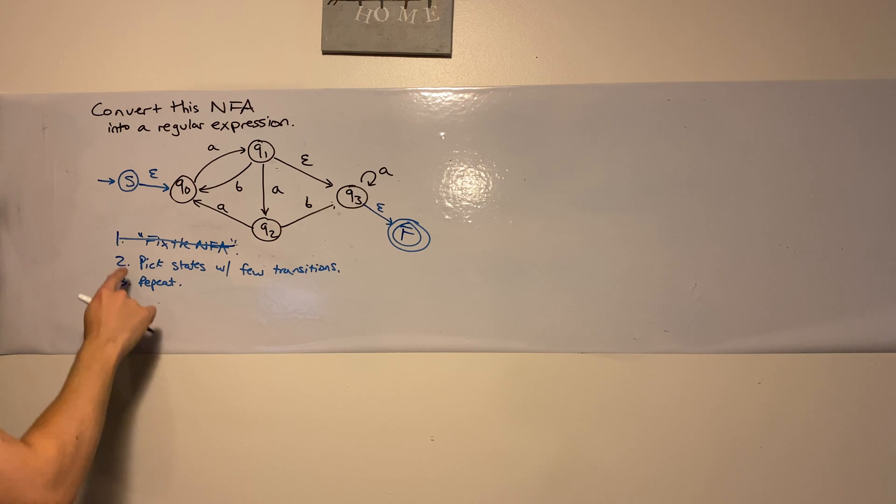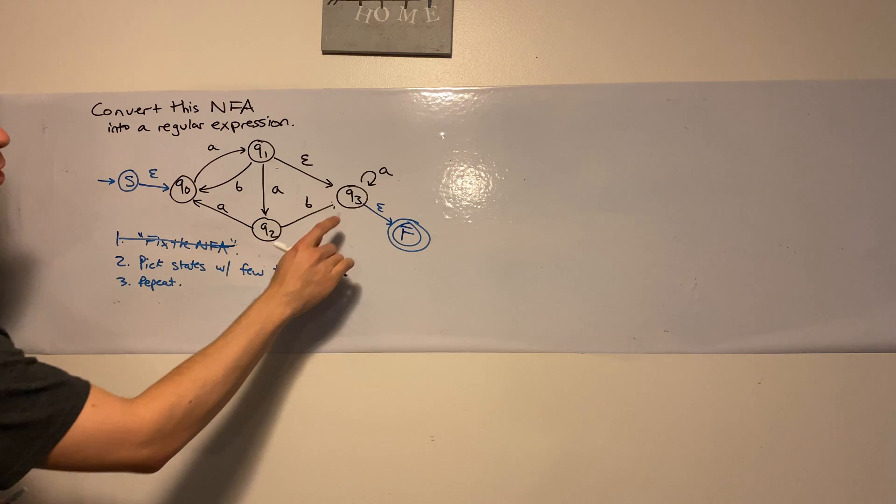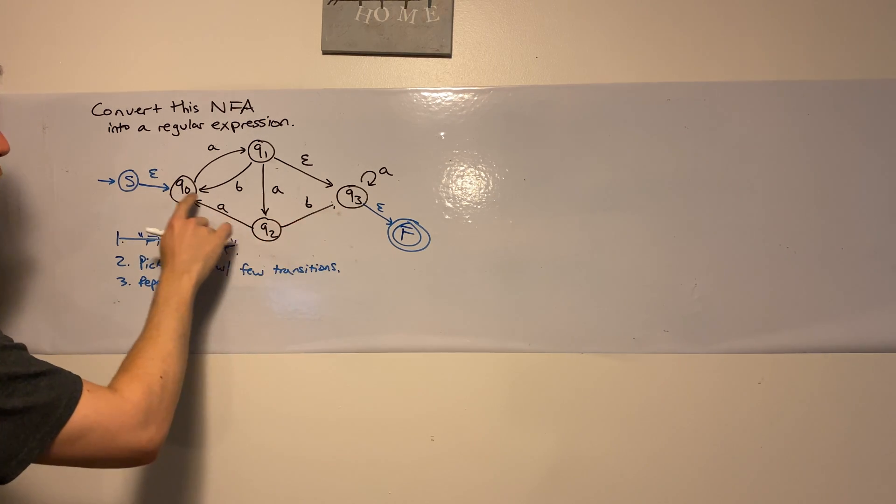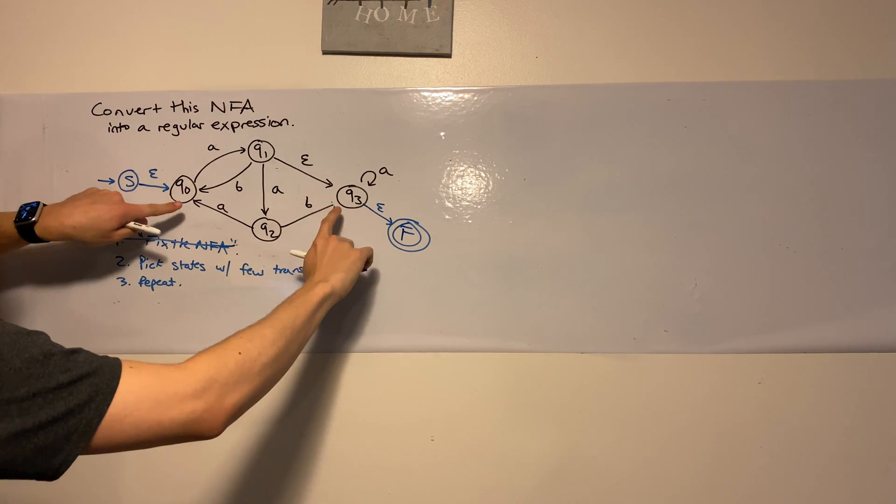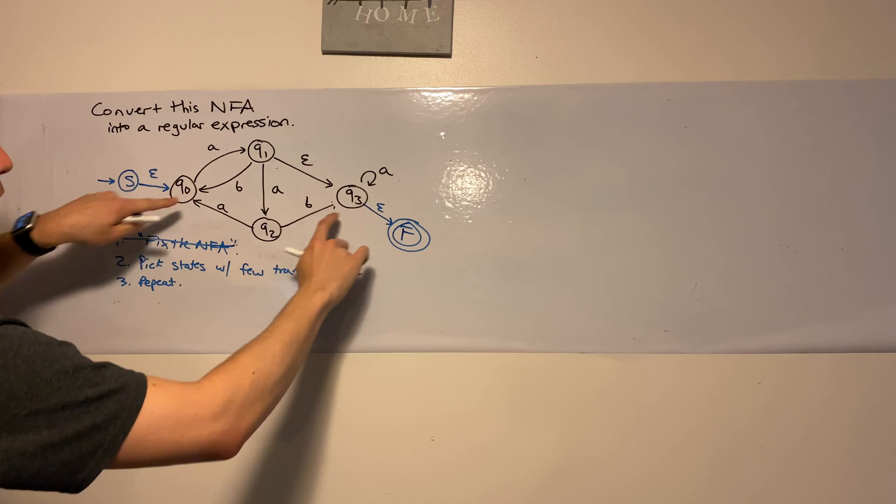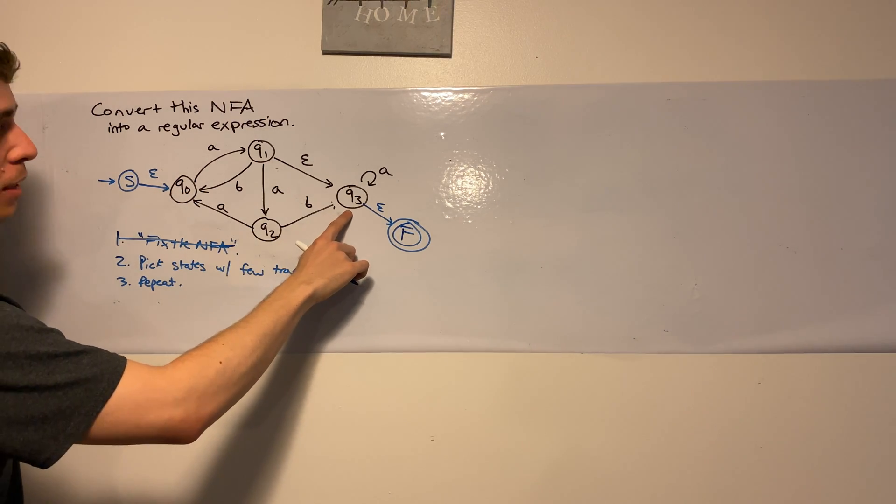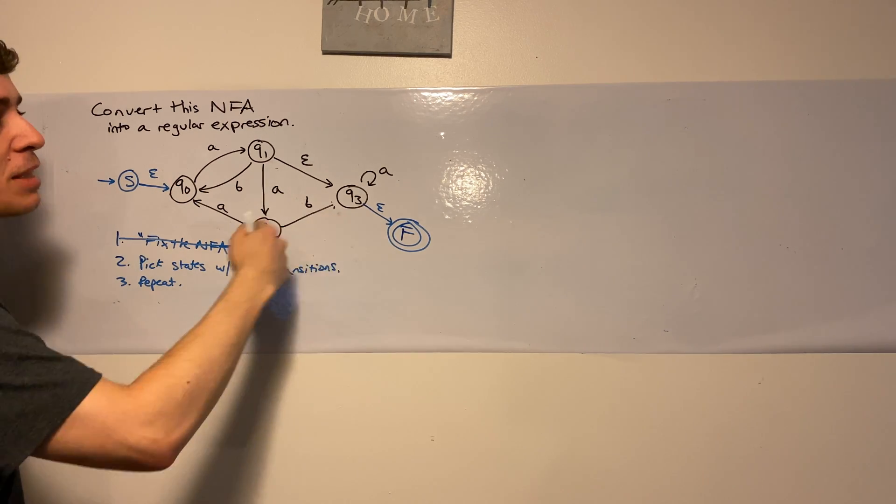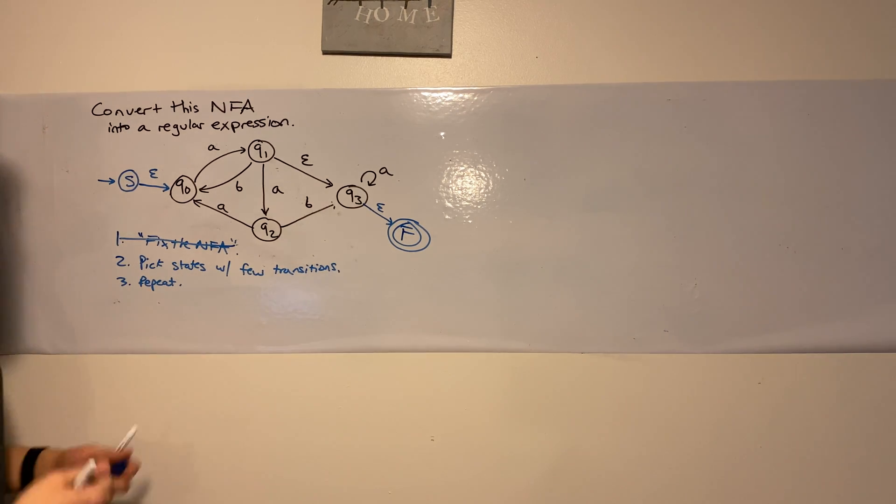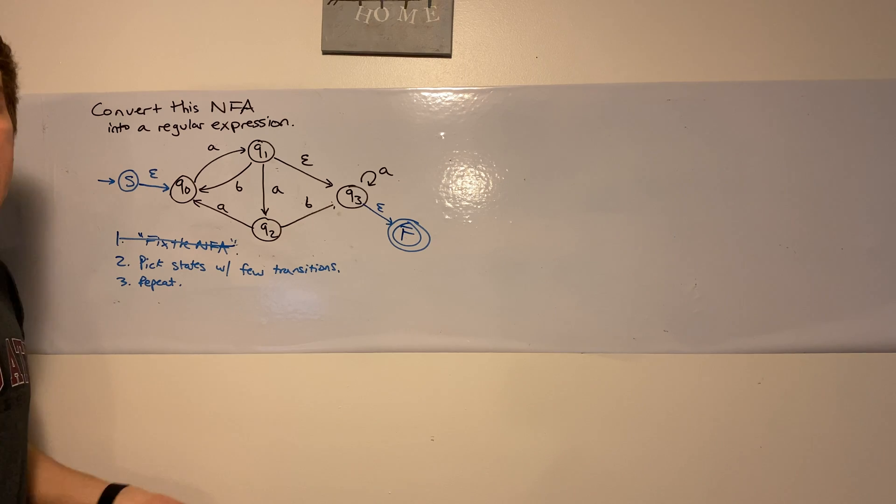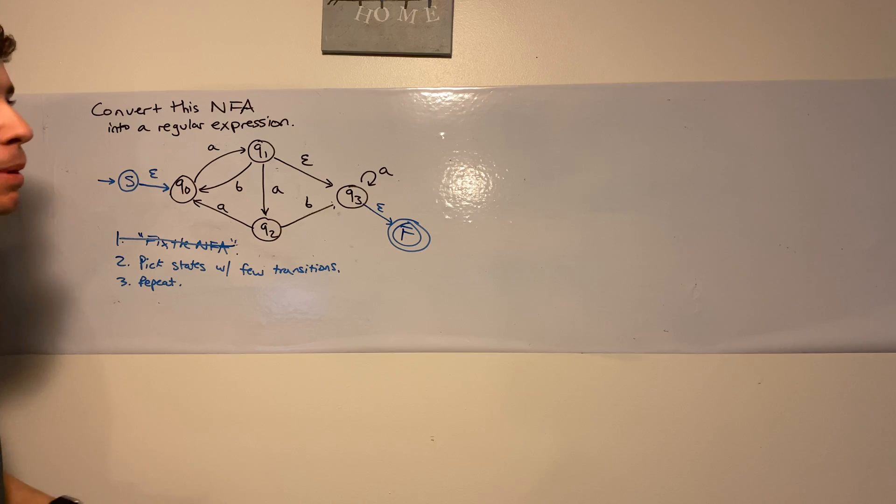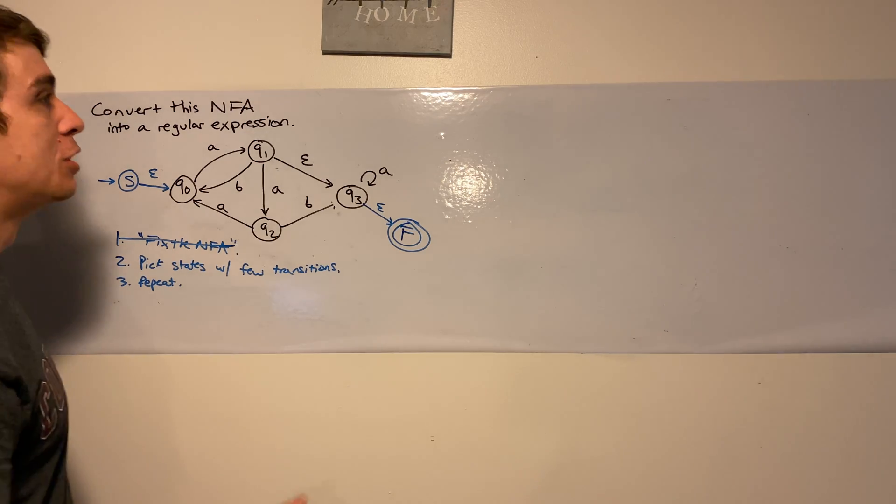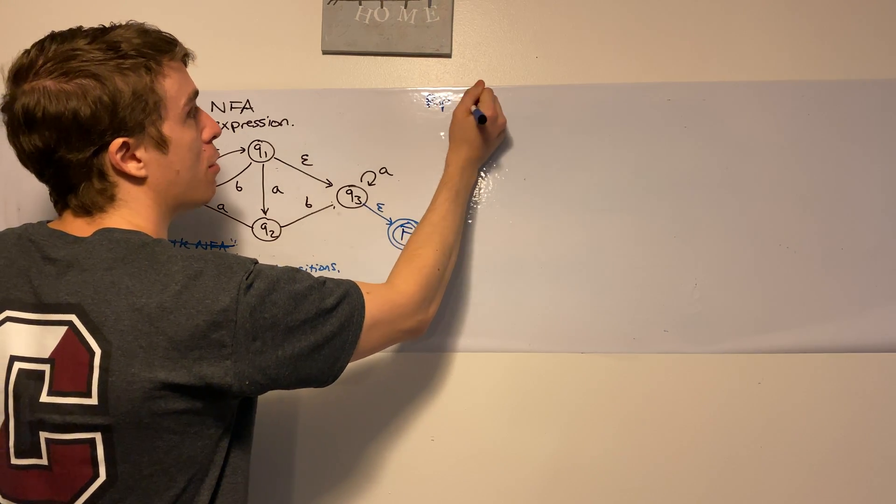Well, there happens to only be one here, but you always, always, always will make a brand new final state. I'm going to call it F and make the previous final states no longer final. And then epsilon from those final states to the brand new final state. Cool. So we fixed the NFA. So that step's done. Now we have to pick states with few transitions and repeat.